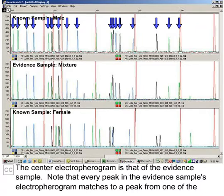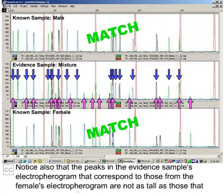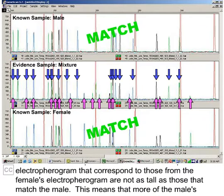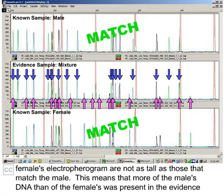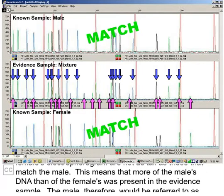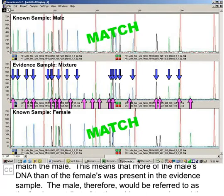Notice also that the peaks in the evidence sample's electropherogram that correspond to those from the female's electropherogram are not as tall as those that match the male. This means that more of the male's DNA than of the female's was present in the evidence sample.